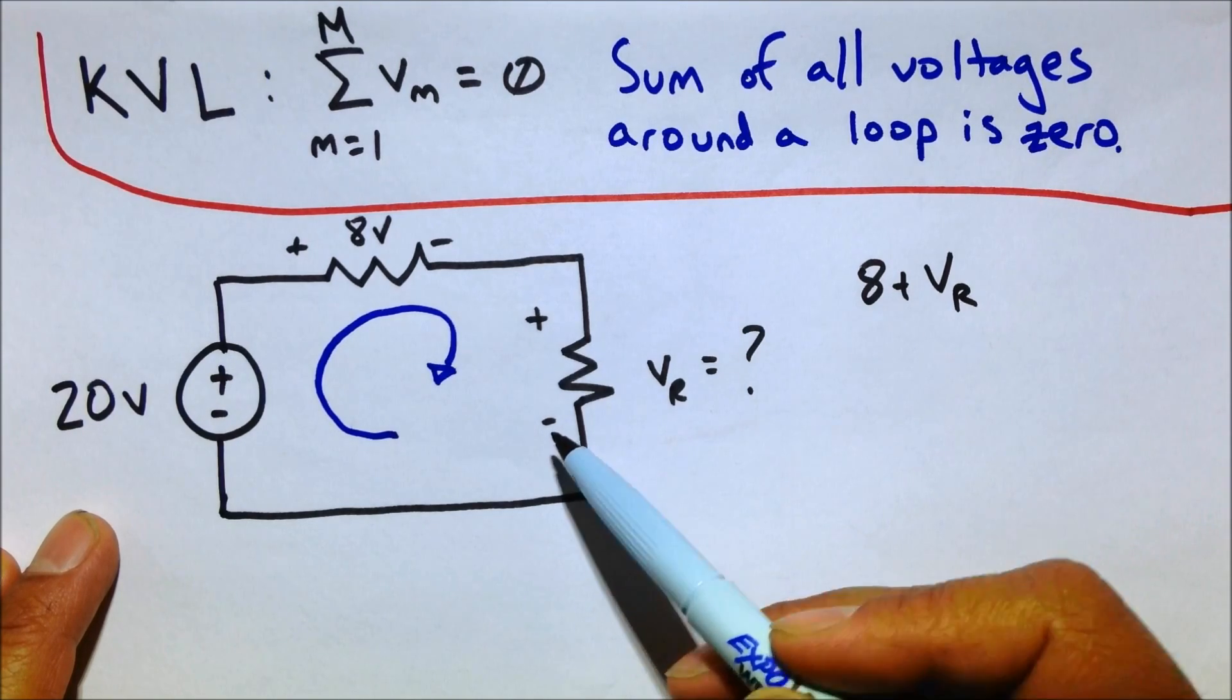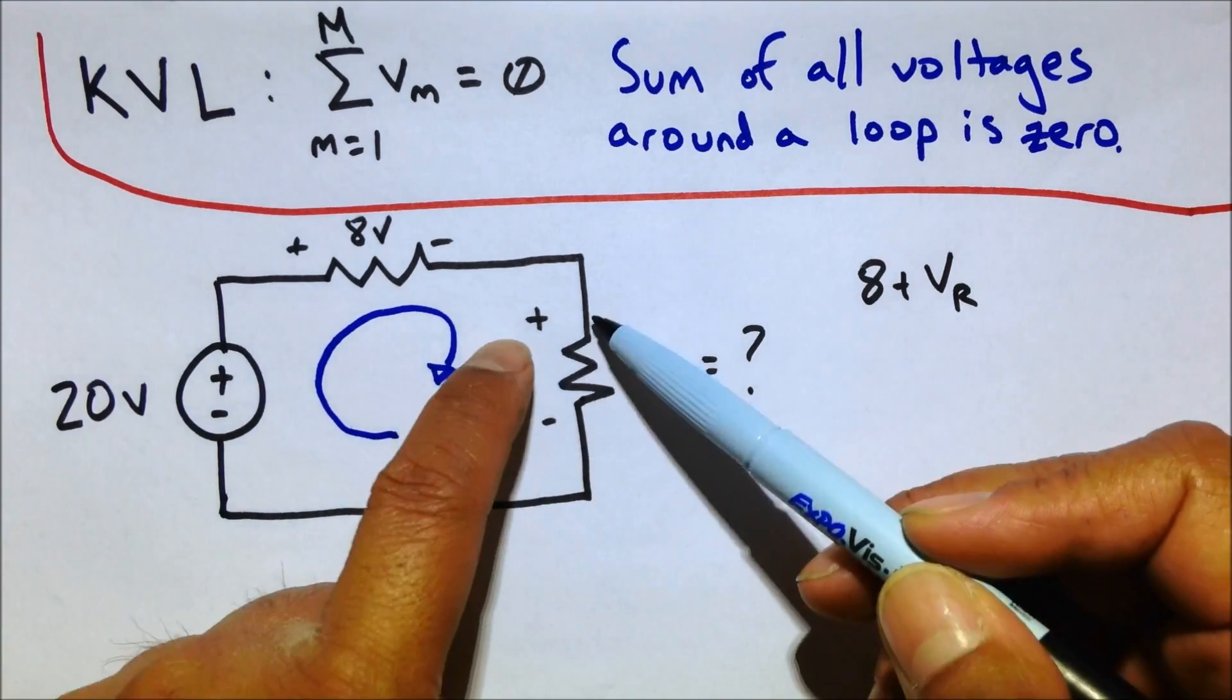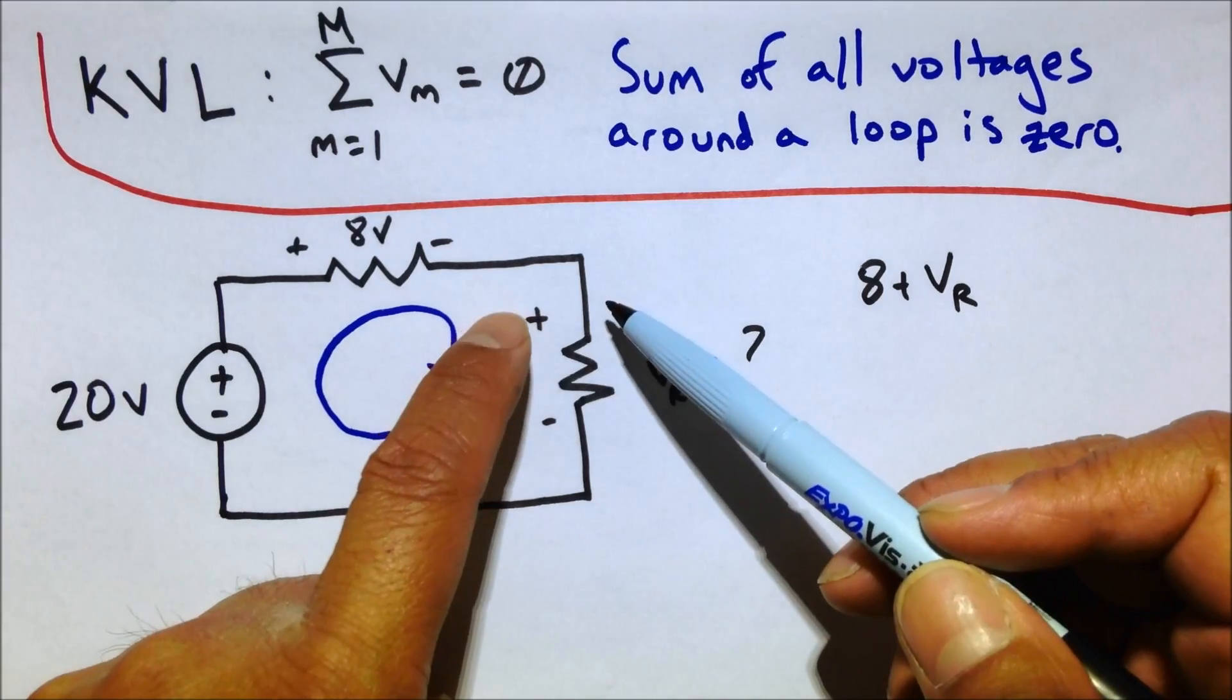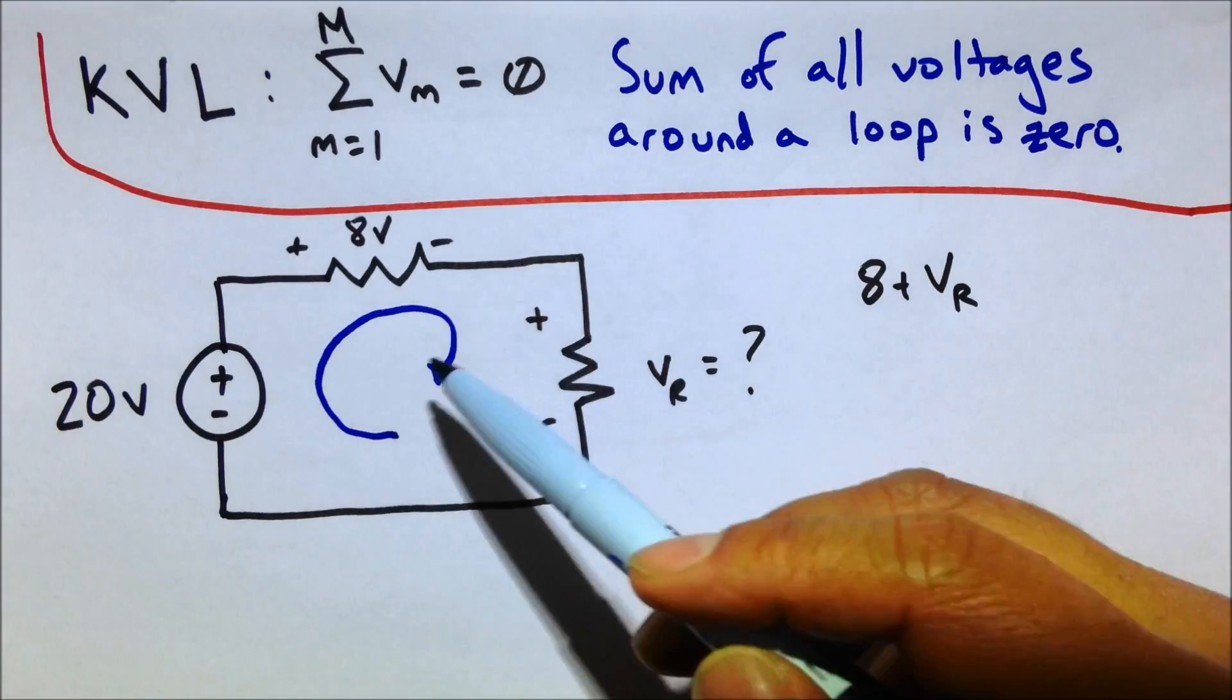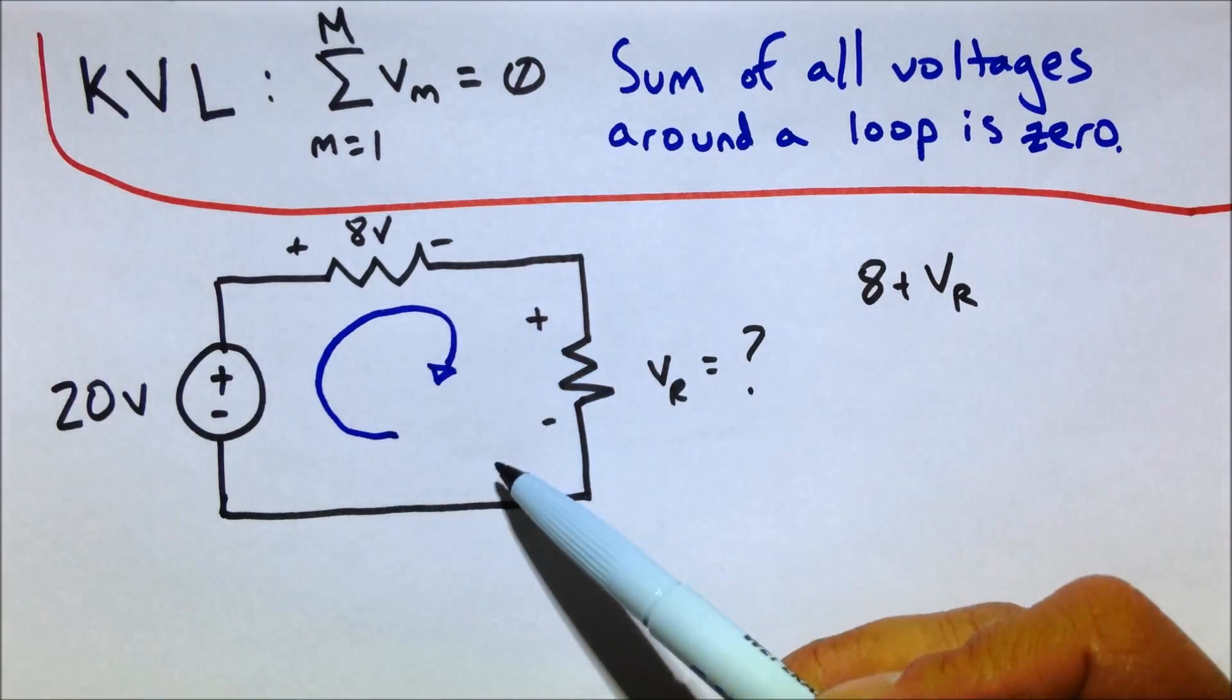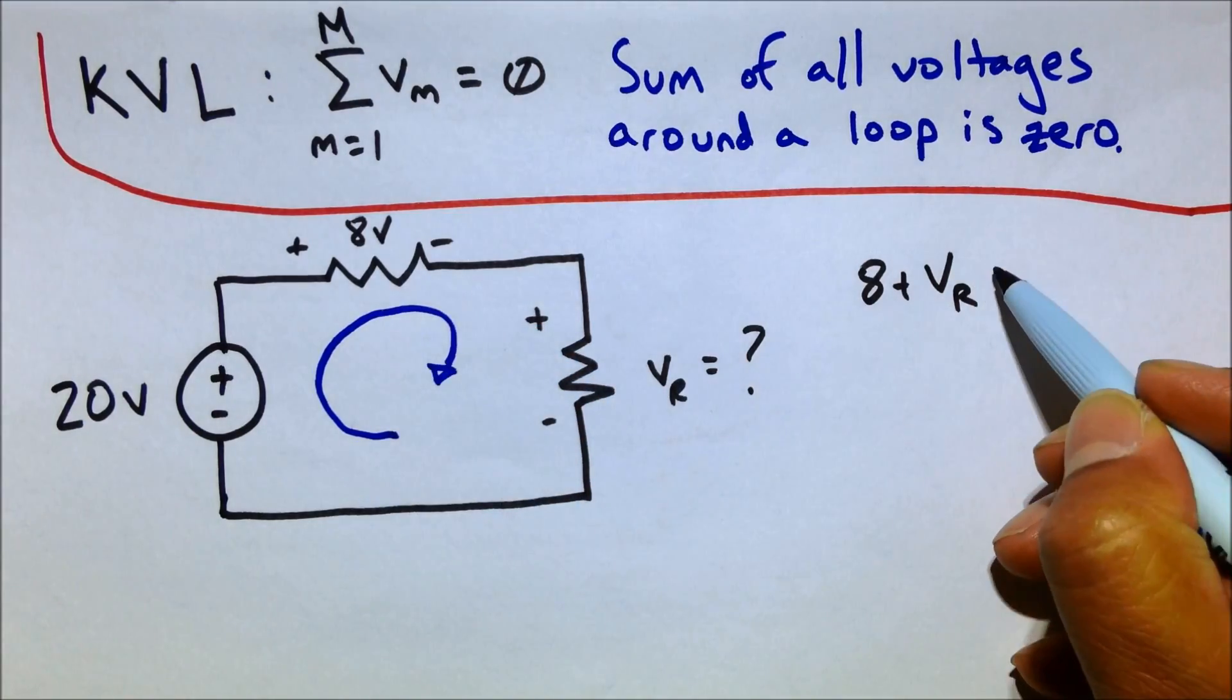If we were going to say that the potential was going from here to there, where this is the high potential and the drop was going that way, then this would be a minus VR, because we're summing along the loop.